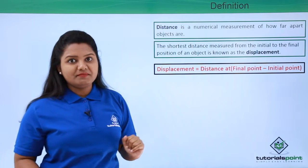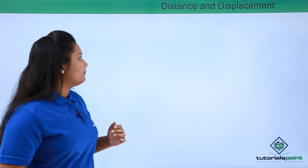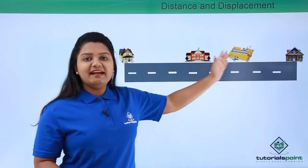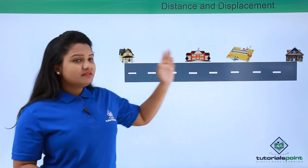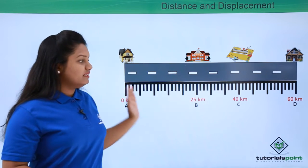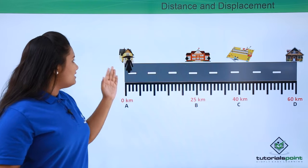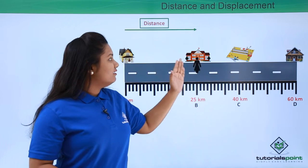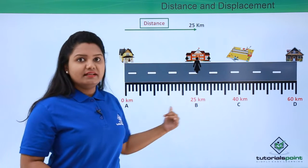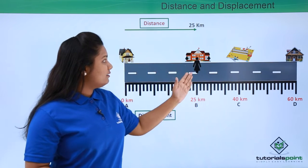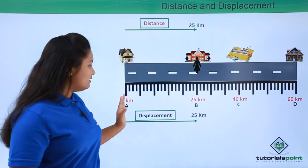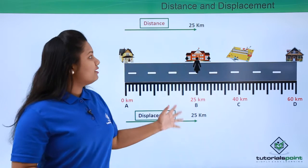For better understanding, suppose I have a straight road connecting my house to your house, with a school and a tennis court in between. I have a scale showing distances at every point. I start from my house. When I reach the school, the distance covered is 25 kilometers. The displacement at the school is final minus initial, which is 25 minus 0, that is 25 kilometers. Here we see that the distance and the displacement are exactly equal.